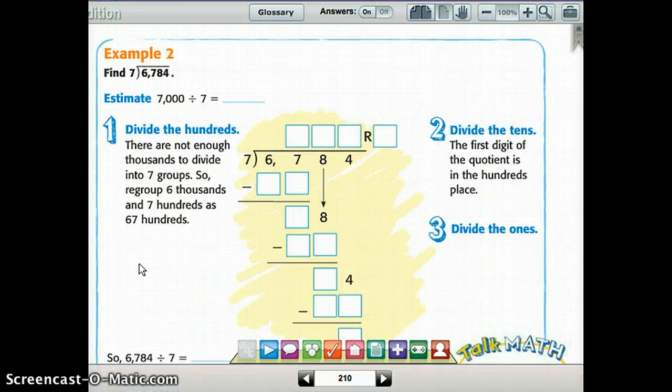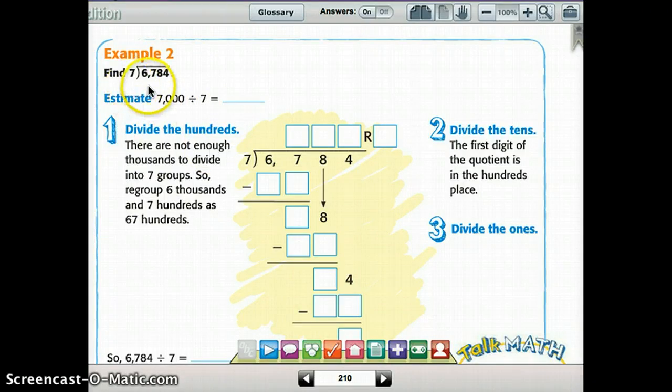Okay, let's look at this next page, page 210, where it has a four-digit dividend. So 6,784. Their first step, they estimated it to 7,000 divided by 7. If you remember that tens trick, that would just be about 7 divided by 7 is 1, and we would put those three zeros to be about 1,000. So 6,784 divided by 7. Well, 7 can't go into 6, so we have to skip that thousands place in this case.